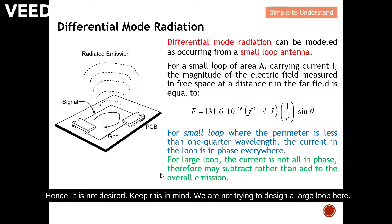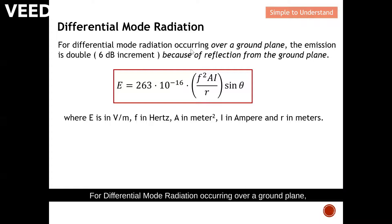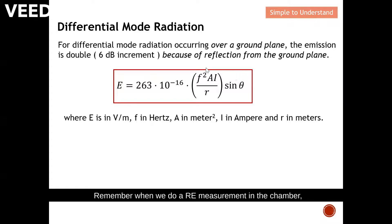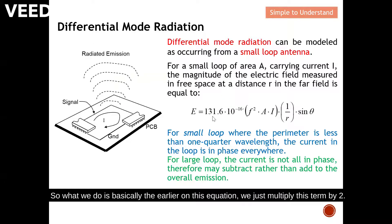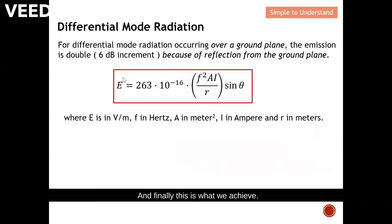For differential mode radiation occurring over a ground plane, the emission is doubled because of reflection from the ground plane. Remember, when we do a measurement in a chamber there will be a ground plane, and because of the ground plane the emission actually doubles. So this is the final equation to calculate the differential mode radiation in far field — we take the earlier equation and multiply by two to get the final result.